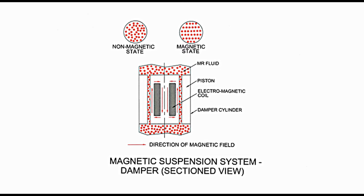Referring to the diagram presenting a portion of the damper cylinder with a piston — it has been sectioned to show inner details. It has MR fluid shown as red dots. Inside the piston, an electromagnetic coil is provided. It is also provided with circular passages all along the circumference of the piston through which MR fluid can pass. In the sectioned view, two such passages and MR fluid passing through them are shown. On the upper side of the diagram, the non-magnetic and magnetic states of the fluid are shown.